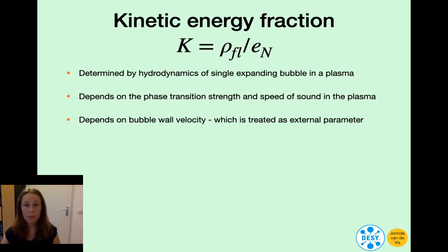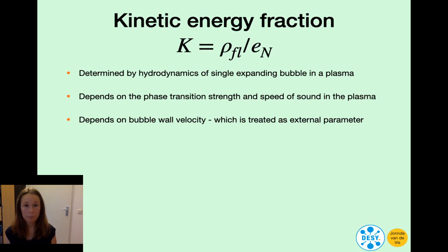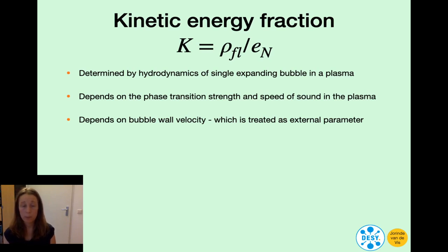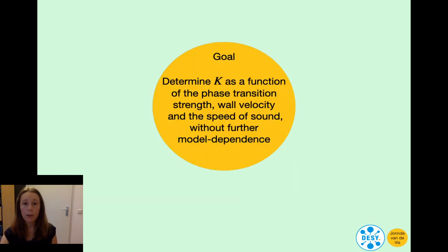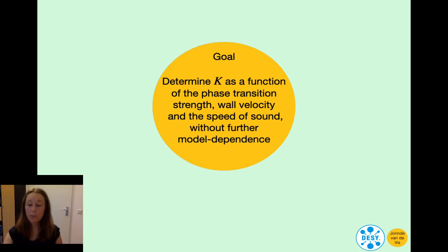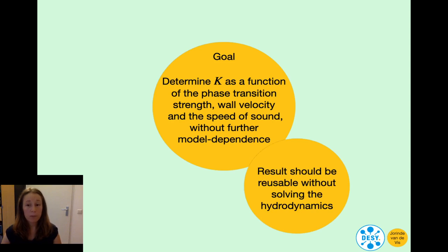The kinetic energy fraction is given by the kinetic energy density in the fluid divided by the energy density at the nucleation temperature, right before nucleation. One determines the kinetic energy fraction by solving the hydrodynamic equations of a single expanding bubble in a plasma. k depends on the phase transition strength and also on the speed of sound in the plasma, and it depends on the bubble wall velocity, which is treated as an external parameter. The goal of our work was to determine the kinetic energy fraction as a function of the phase transition strength, the wall velocity, and the speed of sound without further model dependence. In this way our result can be used for any beyond the standard model physics.